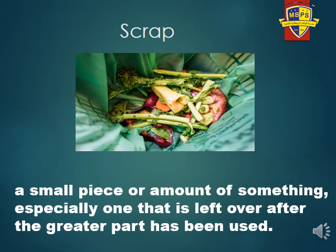Next word is scrap. What is the meaning of scrap? If you can see in the picture, there are a lot of things — seems like vegetables, the leftover parts. A small piece or amount of something, especially one that is left over after the greater part has been used. You can see the core of an apple, some layers of onion, and some pieces of lettuce — these are all called scraps.